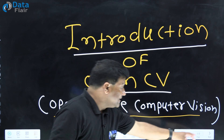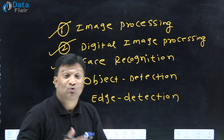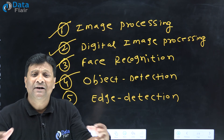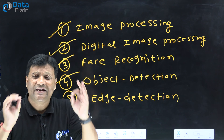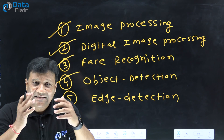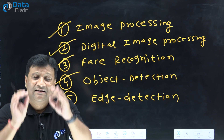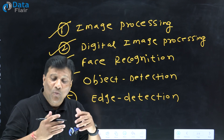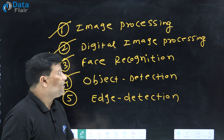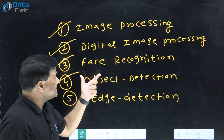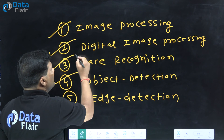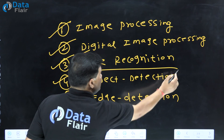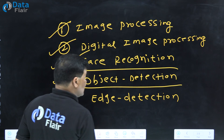Let's talk about the areas where OpenCV is going to be used. There are multiple areas where we can use images or video. OpenCV is basically used for such type of applications — digital image processing, face recognition system, and object detection system.